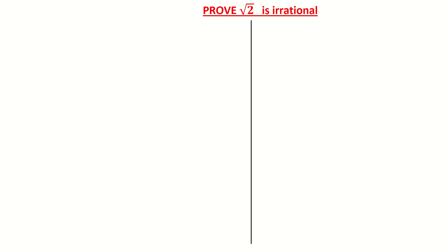In this video we are going to look at how to prove that the square root of 2 is irrational. Remember that an irrational number is a number which cannot be written as a fraction. So in other words, the square root of 2 cannot equal a over b — that's what it means for it not to equal a rational number.